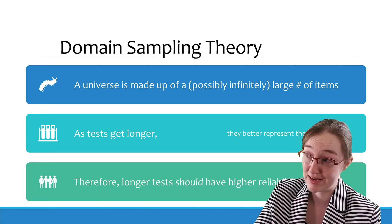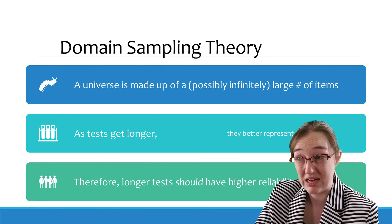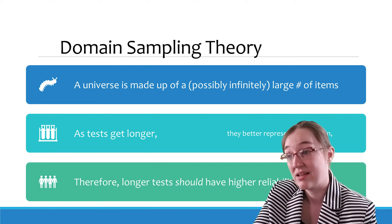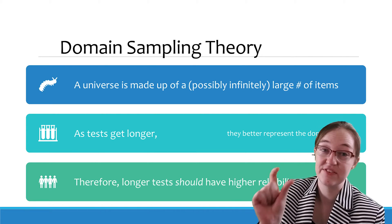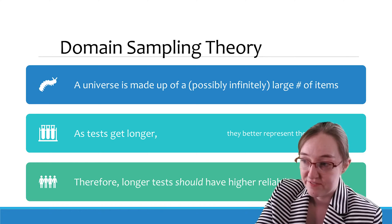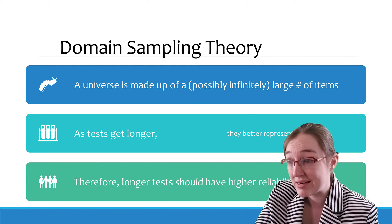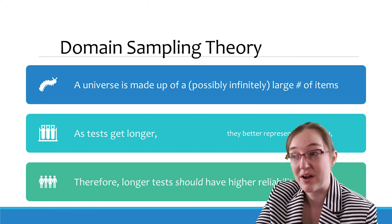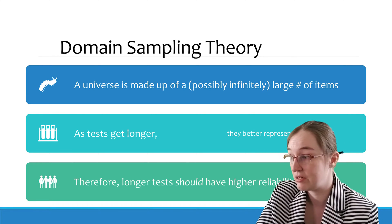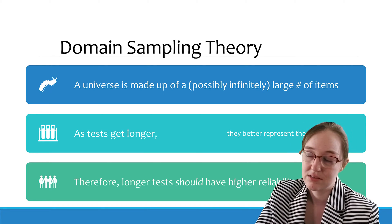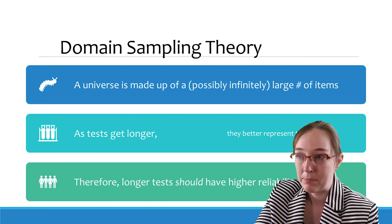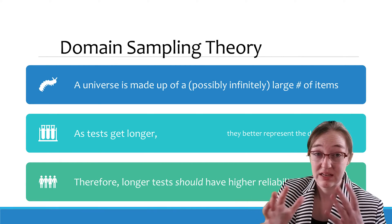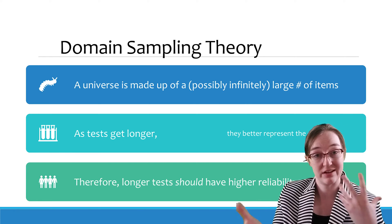The key idea is that a universe is made up of an infinitely large number of questions. As tests get longer, they are better representatives of the domain for each individual version. Longer tests mean higher reliability in theory, though you do have trade-offs like fatigue and exhaustion, so there is definitely a law of diminishing returns. But in theory, longer tests have higher reliability because the errors can cancel out.